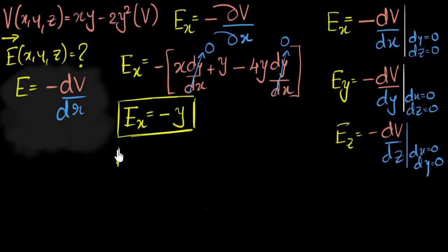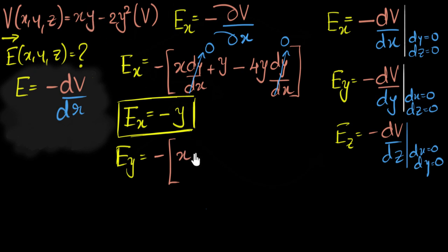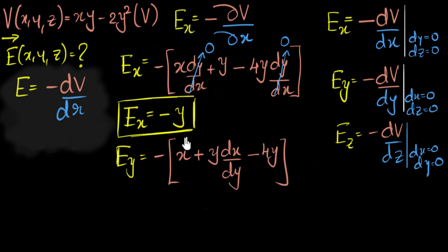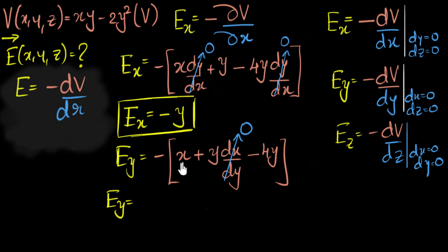Now let's do the Y component. It's going to be negative ∂V/∂y. Using the product rule: first term into differentiation of the second — differentiation of Y with respect to Y is one — plus the second term (Y) into differentiation of the first term, which gives dX/dY. Now differentiating the 2Y² term gives minus 4Y. Since DX and DZ are zero, the DX/DY term goes to zero. So EY equals negative (X minus 4Y), which gives negative X plus 4Y. This is your Y component of the electric field.